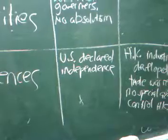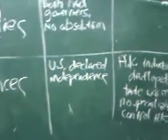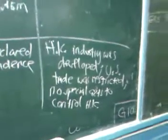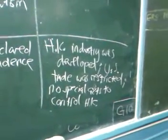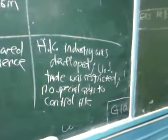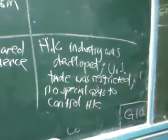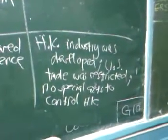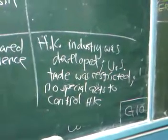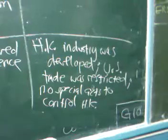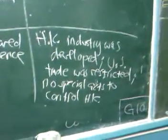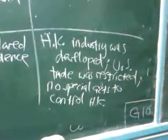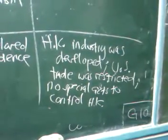The difference is, obviously, the United States declared independence while the Hong Kong people did not. With regard to trade, we had a lot of differences. As a colony, Hong Kong's industry was developed, while U.S. trade was actually restricted. Furthermore, Hong Kong never experienced any special punitive acts. America, of course, in its history under Britain, received many punitive acts — they were recipients of many economic punishments — which was not the case for Hong Kong, fortunately.